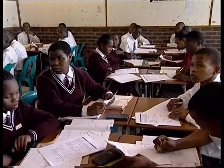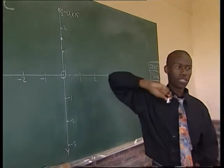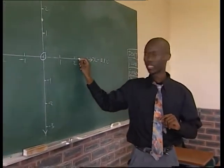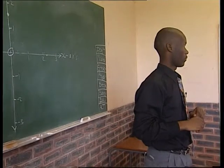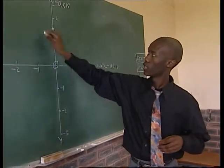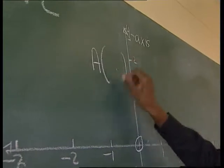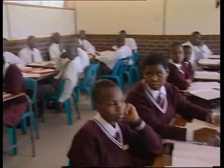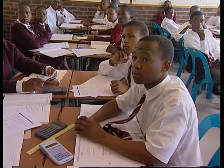The teacher first defines linear functions and their equation, and gets the learners to define the terms. I think c is very crucial because it gives us the y-intercepts, where the graph is going to pass through the y-axis. Any point on the y-axis is the y-intercept, and any point on the x-axis stands for the x-intercept. For every y-intercept point, x is equal to zero.